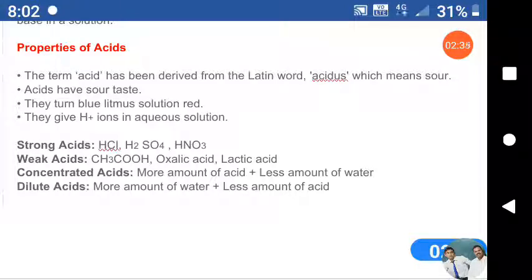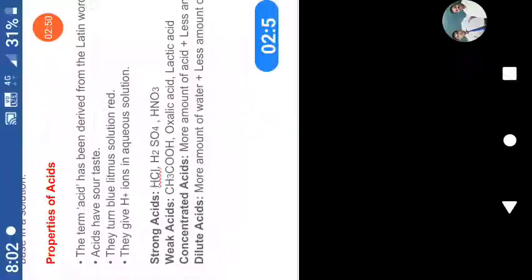You know what is strong acid? It's the amount of H+ ions released in solution. Concentrated acids have more amount of acid and less amount of water. Dilute acids have more amount of water and less amount of acid.